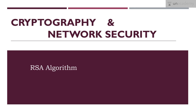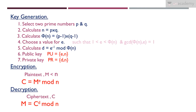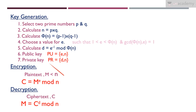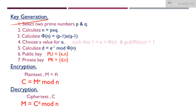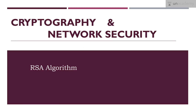RSA is one of the very important public key cryptosystem examples. The name RSA comes from its creators: Rivest, Shamir, and Adleman, who developed this algorithm in 1978. As we discussed in the public key cryptography lesson, the applications are encryption, decryption, digital signature, and key exchange. The RSA algorithm can be used for all three of these applications.